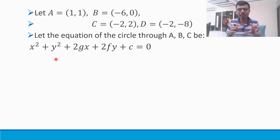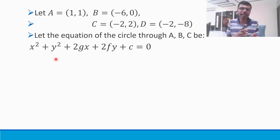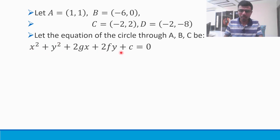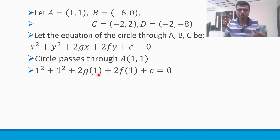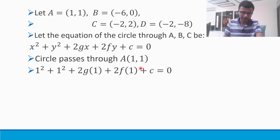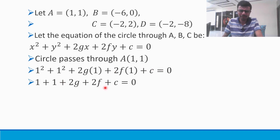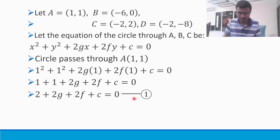This circle is passing through A, B and C — meaning A, B and C each lie on the circle and satisfy the equation. Since the circle passes through A(1, 1), put x = 1 and y = 1 into the equation. So: 1² + 1² + 2g(1) + 2f(1) + c = 0, which gives 2 + 2g + 2f + c = 0. This is my first equation.